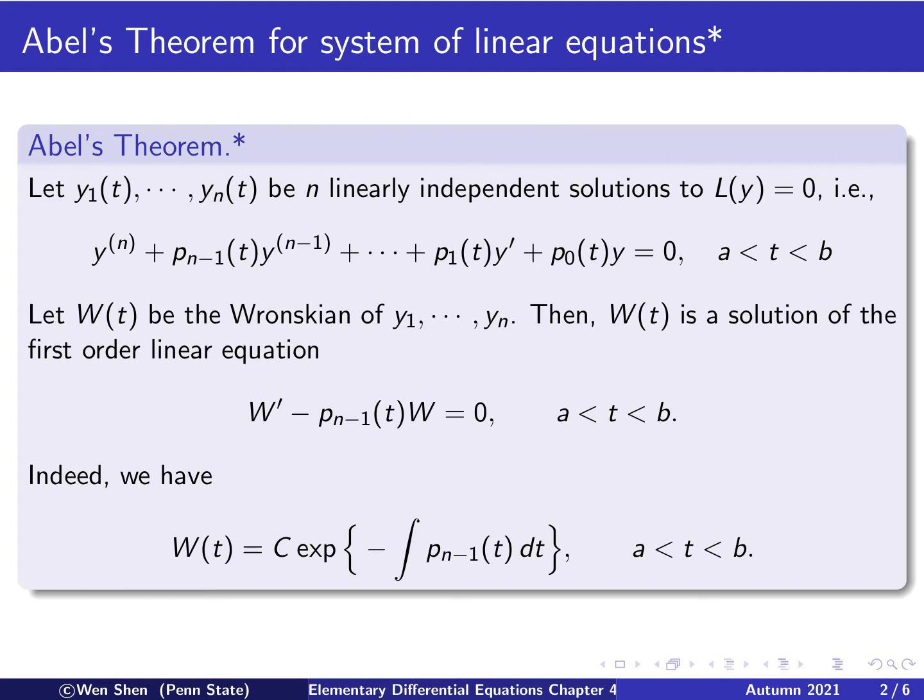We have encountered Abel's theorem for second order linear equations. Now we want to extend this to a system of N equations where N is bigger than 2. So let's read the statement of the theorem first. Let now y1, y2, through yN be n linearly independent solutions to the equation, the homogeneous equation L applied to y equals 0. That's the linear differential operator, which we can write out in detail. This means this equation, equals 0 and valid on an interval for t between a and b.